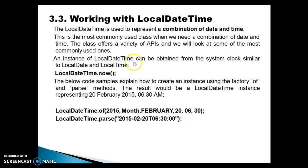An instance of LocalDateTime can be obtained from the system clock, similar to LocalDate and LocalTime. In LocalDate we have a factory method called now, and similarly we also have a now method in LocalDateTime. If you want to get the system local date and time, you can call this method using the class name directly because it is a static method. The code samples below explain how to create an instance using the factory of() and parse() methods. LocalDate and LocalTime also have off() and parse() methods, and similarly we have off() and parse() in LocalDateTime as well.